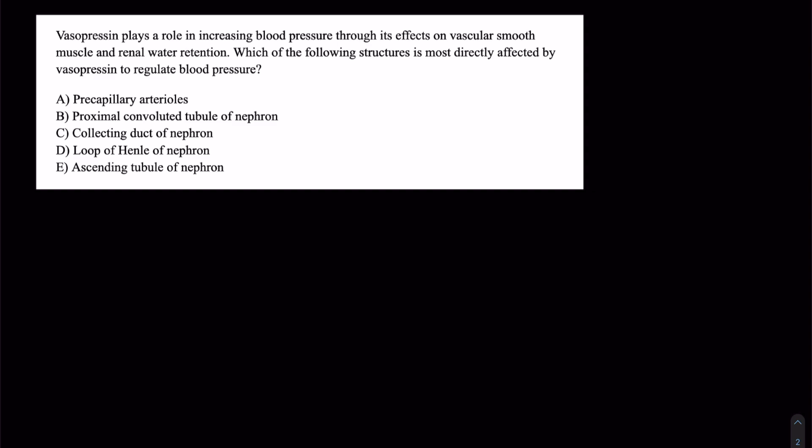We could ask this question in another way as well. It's a fairly similar question, but this time it says which of the following structures is most directly affected by vasopressin to regulate blood pressure specifically. And so this is going to be our precapillary arterioles.